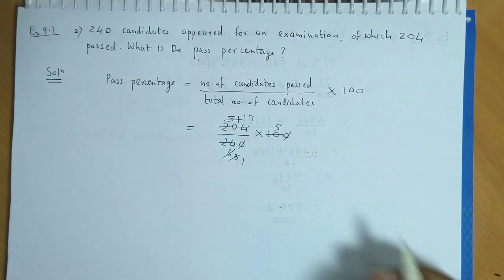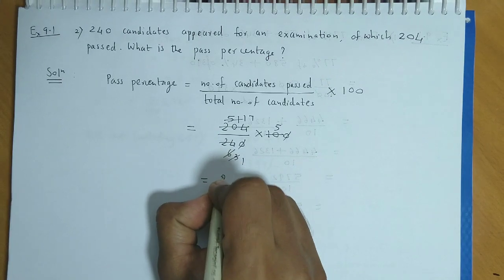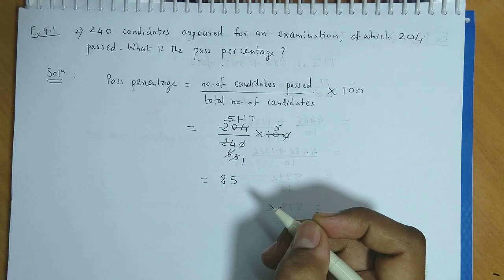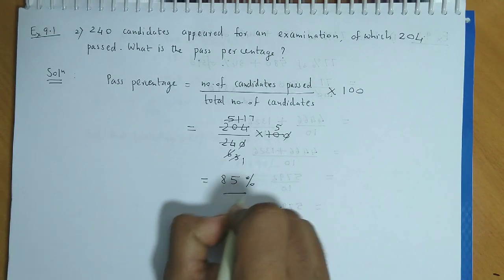1 x 3 x 17 x 5 x 85. So, the pass percentage is 85%.